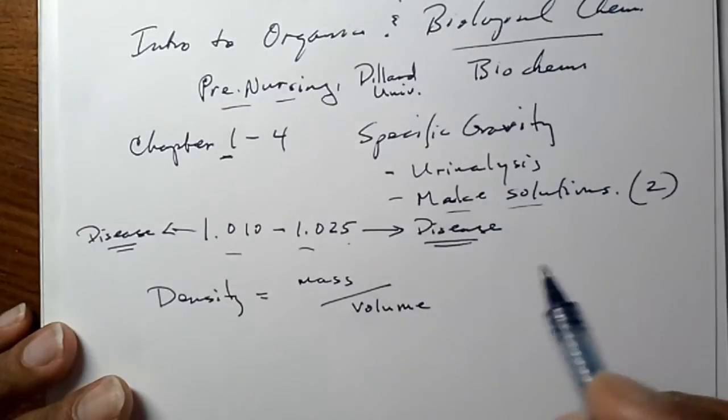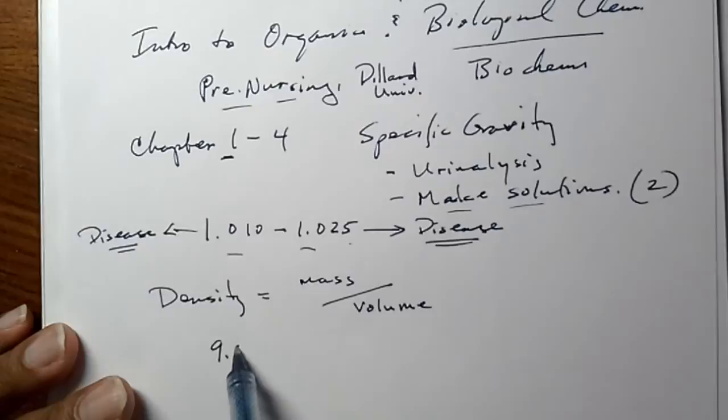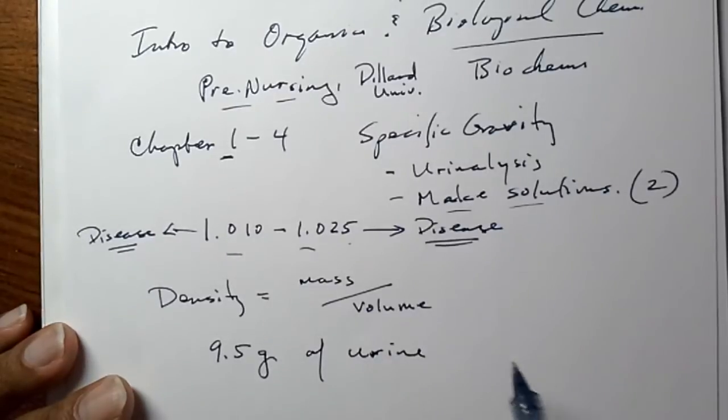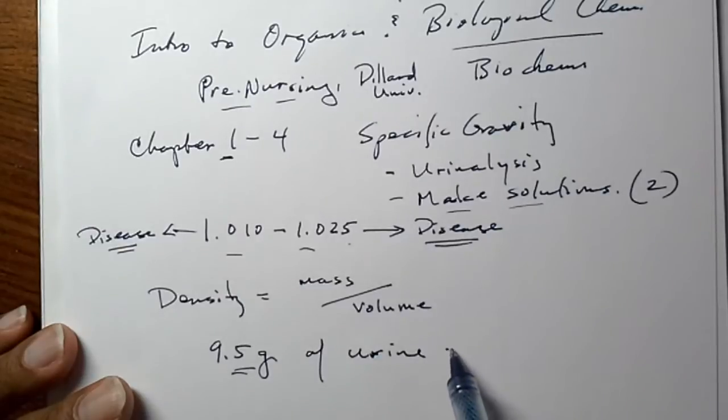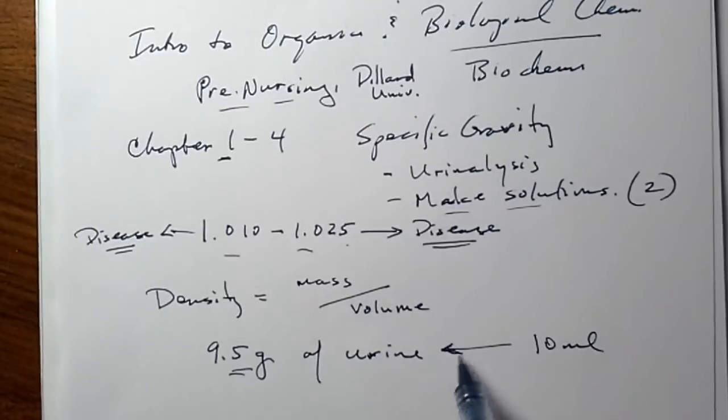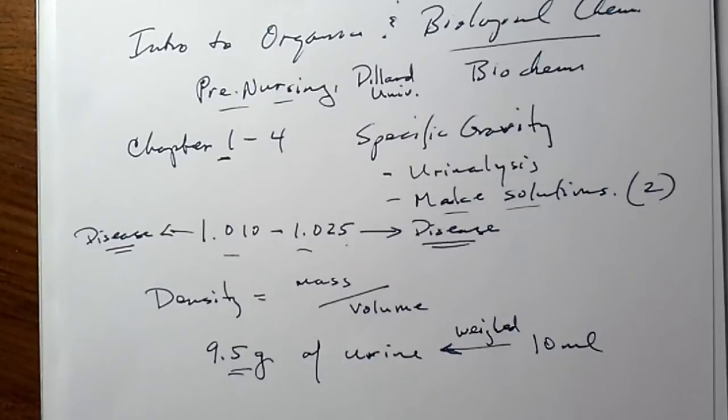So for instance, if I have 9.5 grams of urine, and I take and get that weight, but of course that weight came from collecting 10 milliliters. So I collected 10 mils of urine, I weighed it.